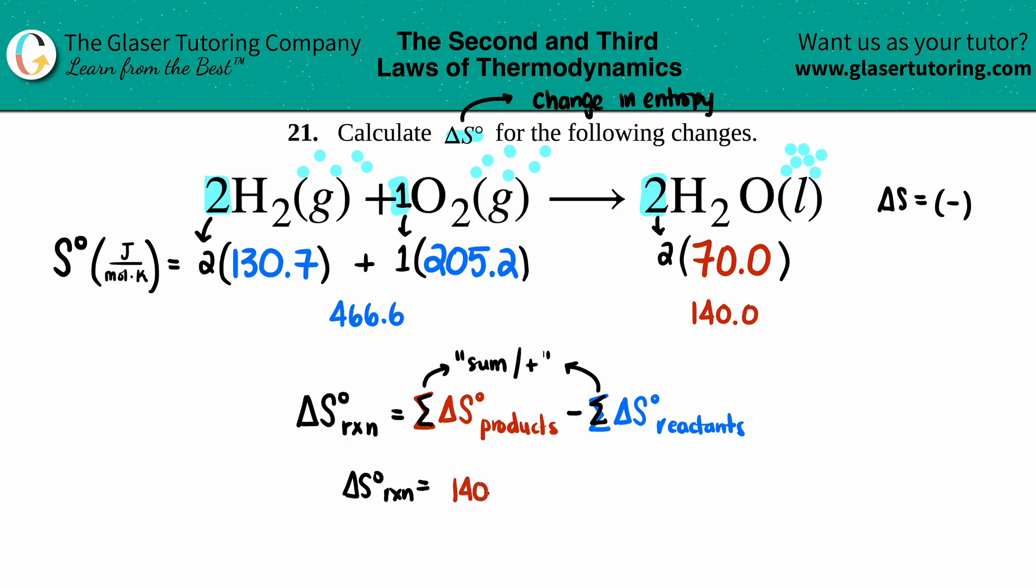And we're going to get a delta S value of—if you can see here, it's going to be a negative value, so we made a correct hypothesis. 140 minus 466.6, I get negative 326.6.